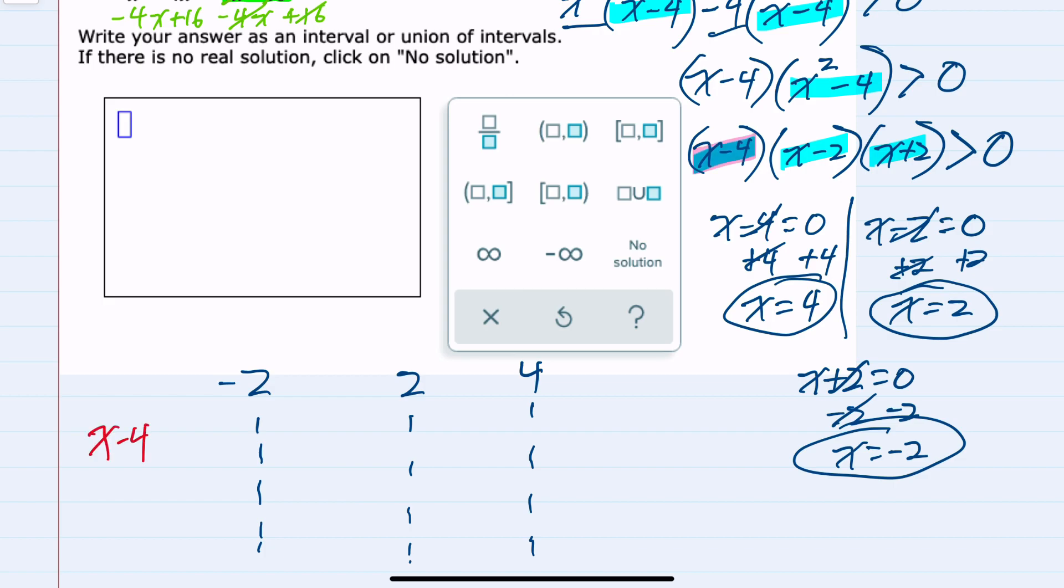If I plug any value in greater than 4, that would be a positive. If I plug in any value less than 4, it would be a negative. And then the next factor is x minus 2. For x minus 2, any factor greater than 2 would be positive. Any factor less than 2 would make that negative.